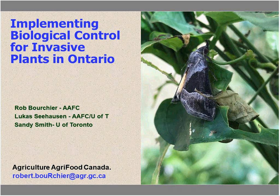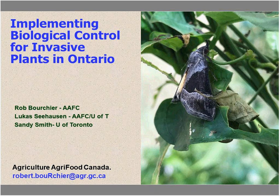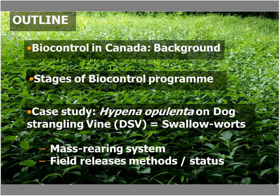Thank you. The joy of technology, and thank you to the Invasive Plant Council for setting this up. Today I'm going to be talking about implementing biocontrol programs for invasive plants in Ontario. I'd like to acknowledge my co-authors Lucas Seahawson and Sandy Smith at U of T who worked on this with me. I'm going to give you an idea of the process we go through in trying to establish a biocontrol agent in Canada — background on biocontrol, the stages of a biocontrol program, and then a detailed case study using a biocontrol agent on Dog Strangling Vine, or swallowwort, Vincetoxicum opulenta, and where we are with the garlic mustard program.